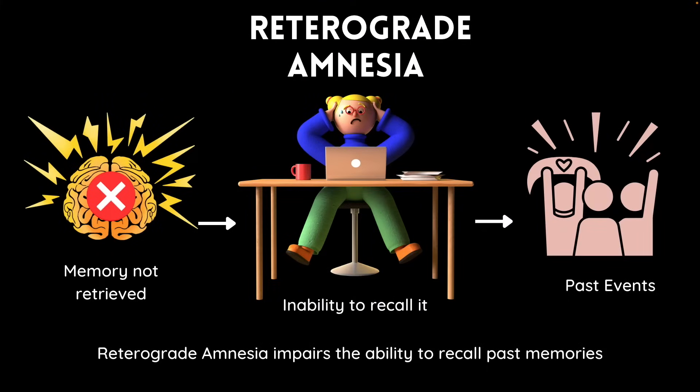Retrograde amnesia is a form of memory loss that involves an inability to access memories formed before the onset of amnesia. Retrograde amnesia is sometimes temporary but can also be permanent or progressive. The severity and duration of this type of amnesia depends on what is causing it.